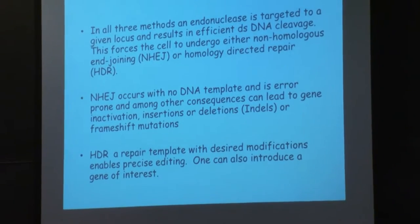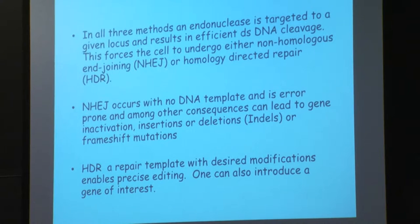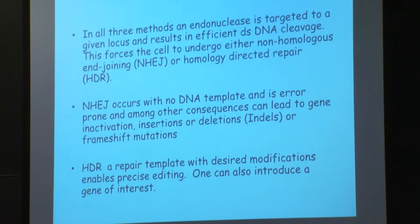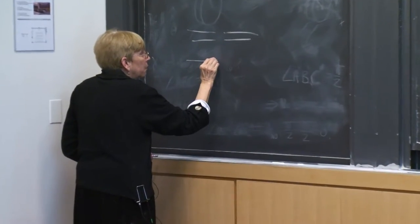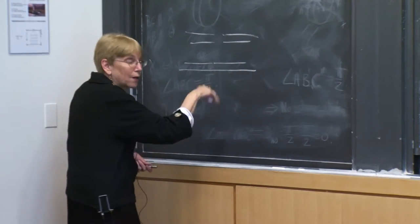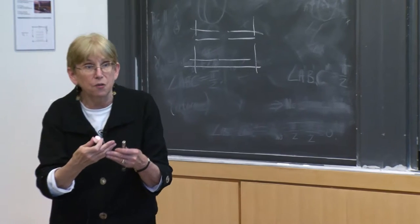With non-homologous end-joining, the repair puts things back together, but with blunt ends you've lost information from the sequence. Putting them back together is really tough. When you put them back together you might have an insertion, a deletion, a frameshift — you get a mess. But when you look at the ends of your gene using PCR, you get a mixture of things you can sequence to tell something about how the repair happened at the double-stranded break.